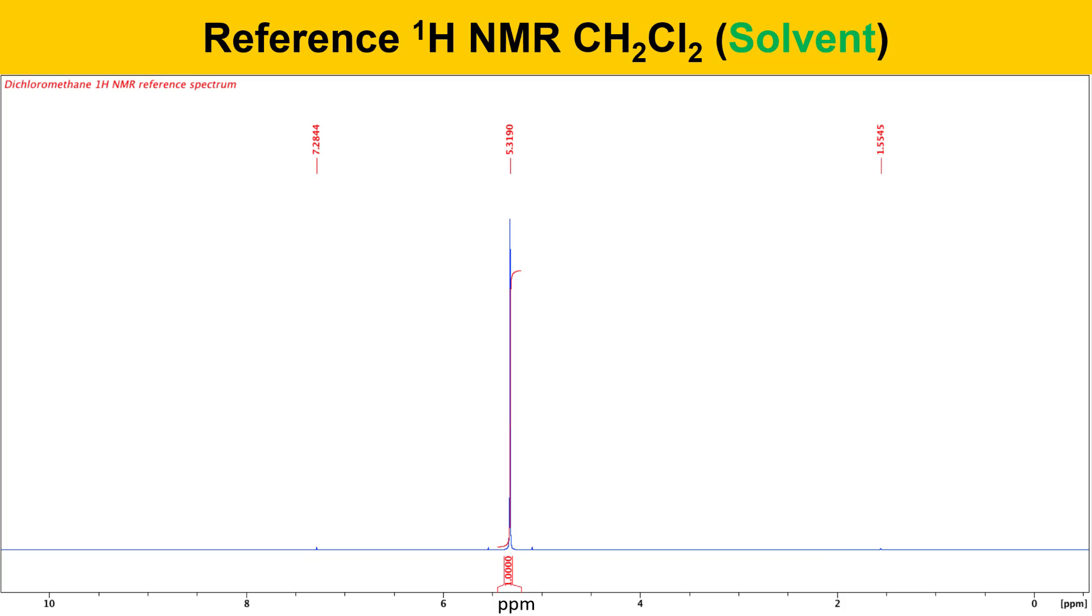The reference proton NMR spectrum for dichloromethane solvent is shown here. It shows up as a singlet at 5.32 ppm, due to the one unique type of proton that's present in this solvent. If you look very carefully, you can also see peaks due to residual CHCl3 and a little bit of water in this sample as well.